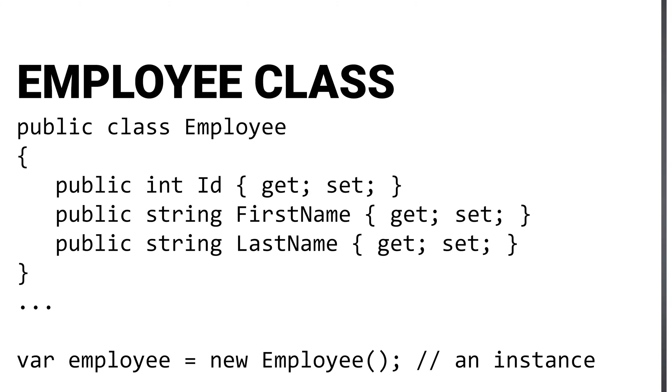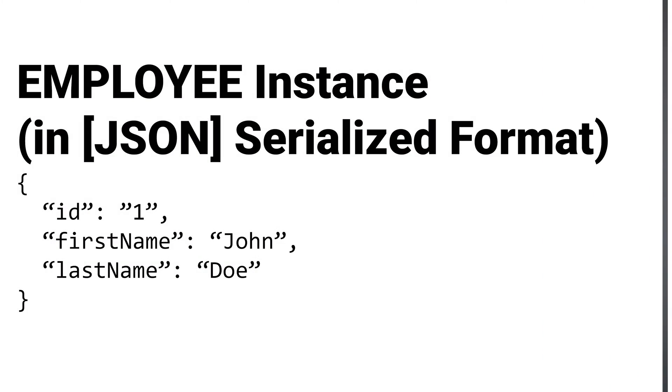Serialization is the process of taking some data state — let's say in the form of an object in some programming language — and converting that instance and in-memory representation into a serializable format. We call this a serialized format. This is used to either send it over the web via HTTP or other protocols, or we can persist it in a local file.